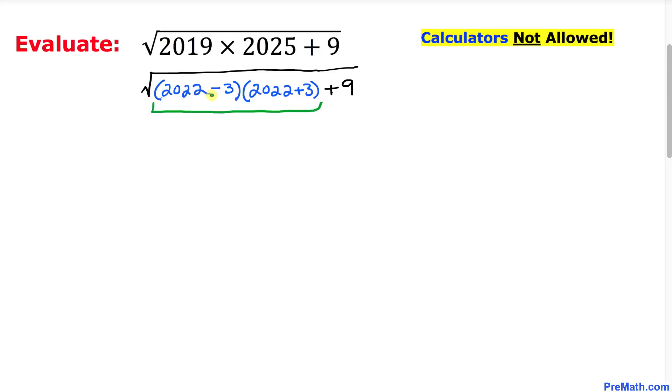Therefore we are going to use a well-known formula: a minus b times a plus b equals a squared minus b squared. Then this could be written as 2022 squared minus 3 squared, and then simply this plus 9.